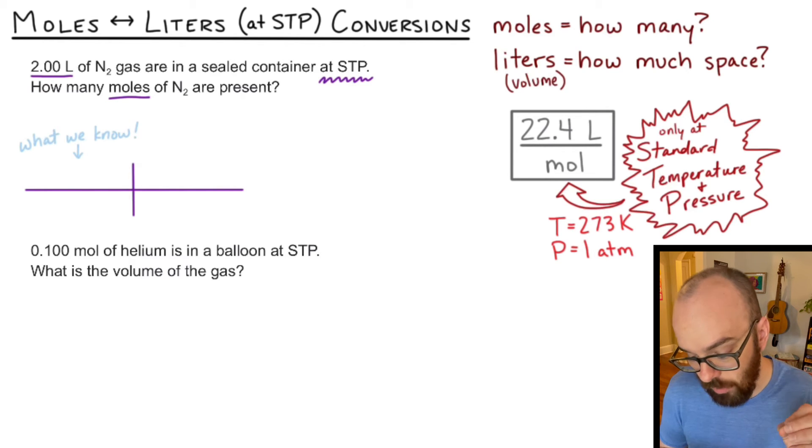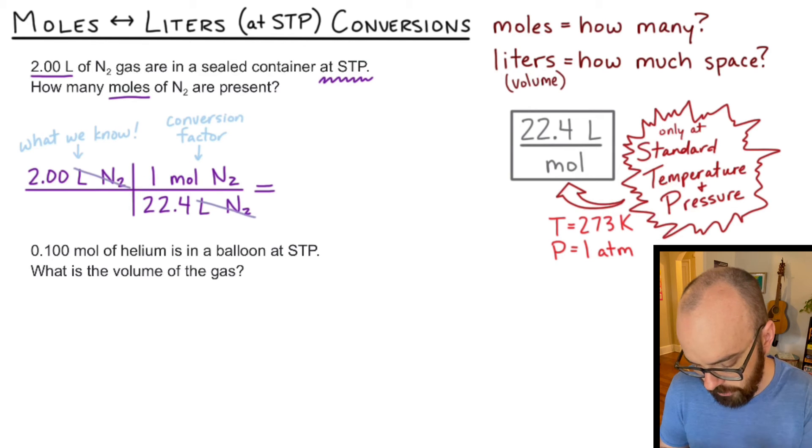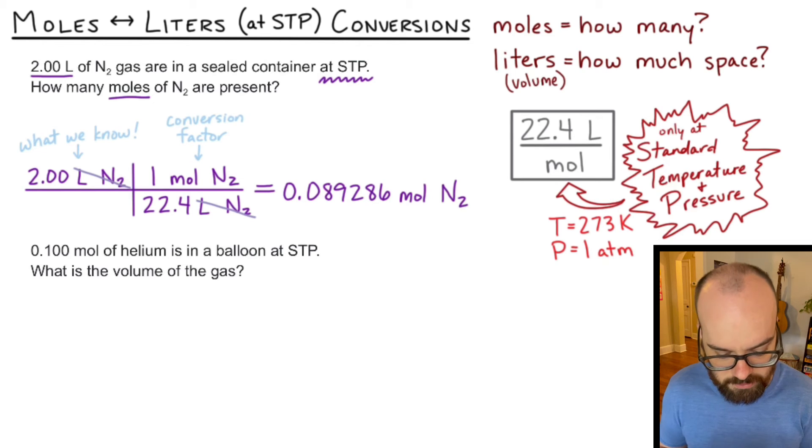And on the left side, we're always going to write what we know. And on the right side, we're going to write our conversion factor, which in this case will be our 22.4 liters per mole. What we know or what we're starting with is the 2.00 liters of nitrogen. And every mole of nitrogen that we have is going to take up 22.4 liters. So I'm going to write 22.4 liters on the denominator of my fraction, because I need liters to divide out with liters on the bottom. So 22.4 liters of nitrogen. And on the top, I'll write one mole of nitrogen, because that's my conversion factor. One mole takes up 22.4 liters. Liters of nitrogen divide out, and I'm left with 0.089286 moles of nitrogen.